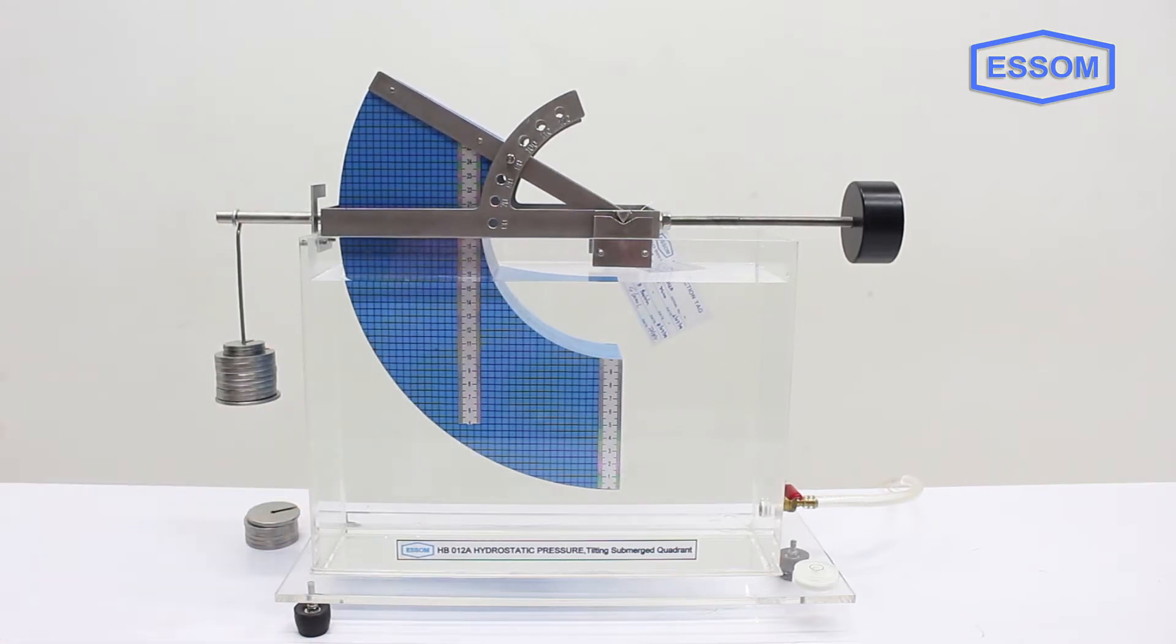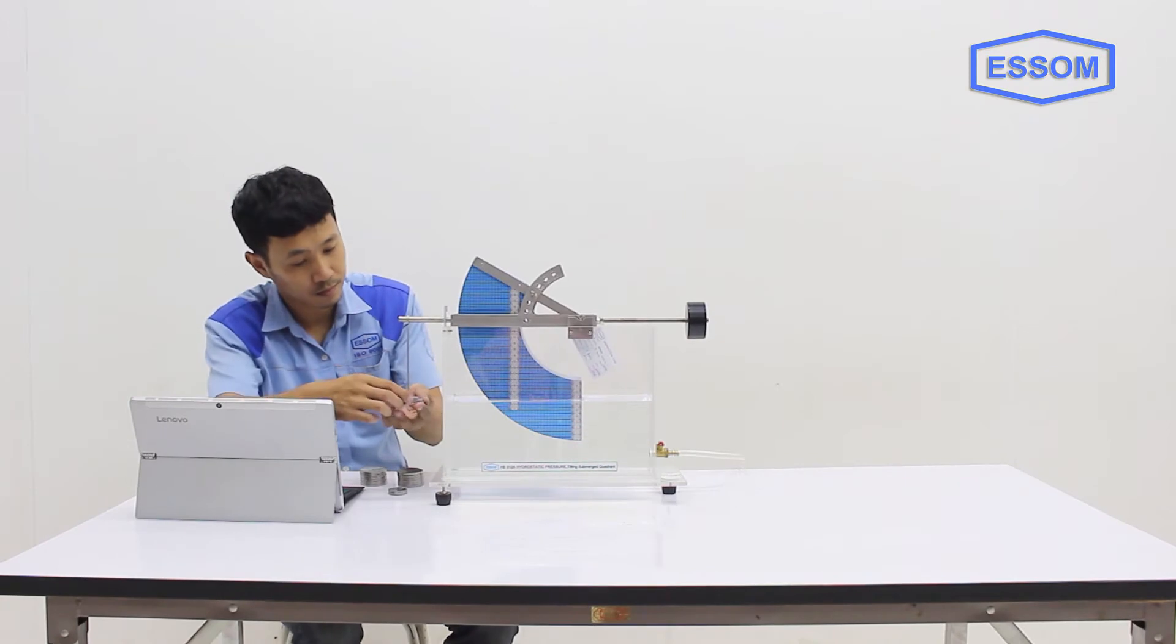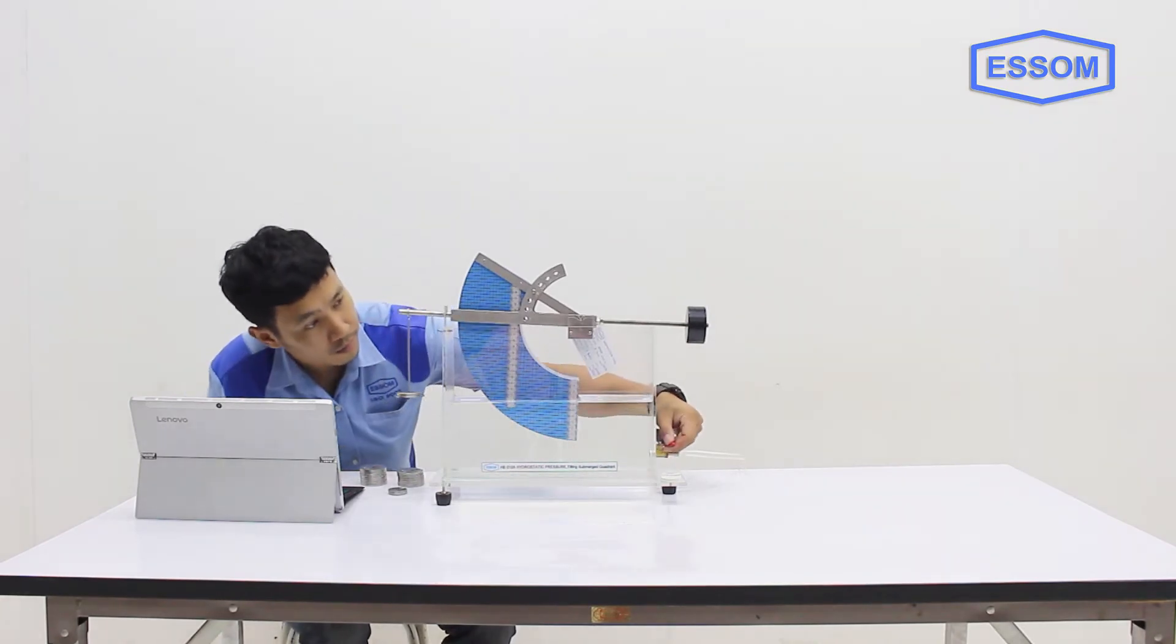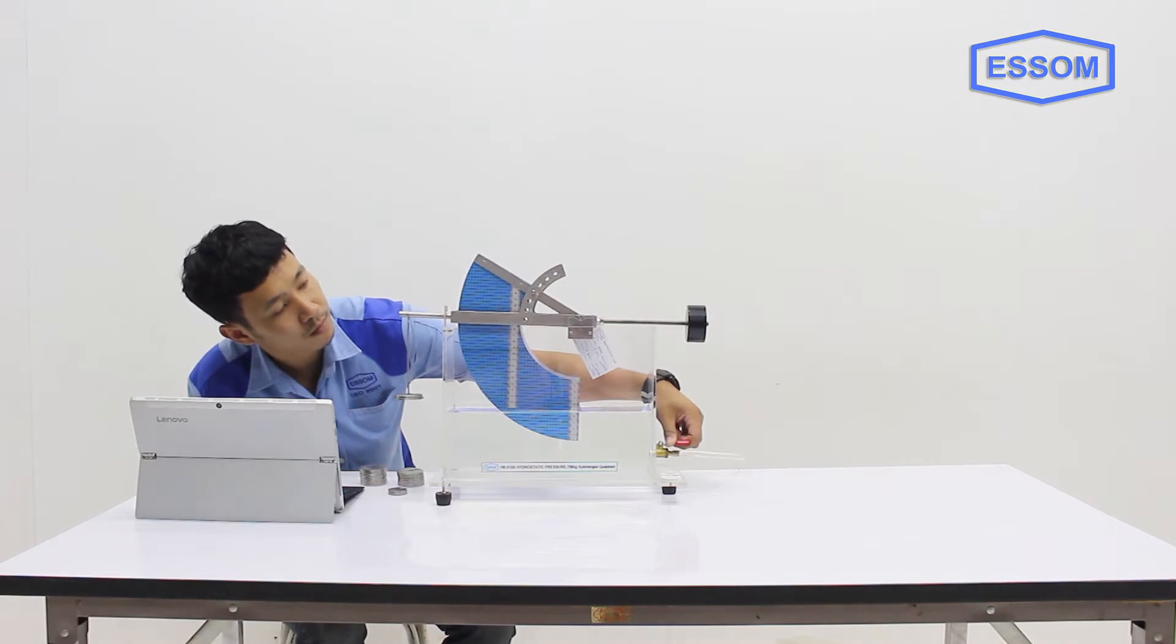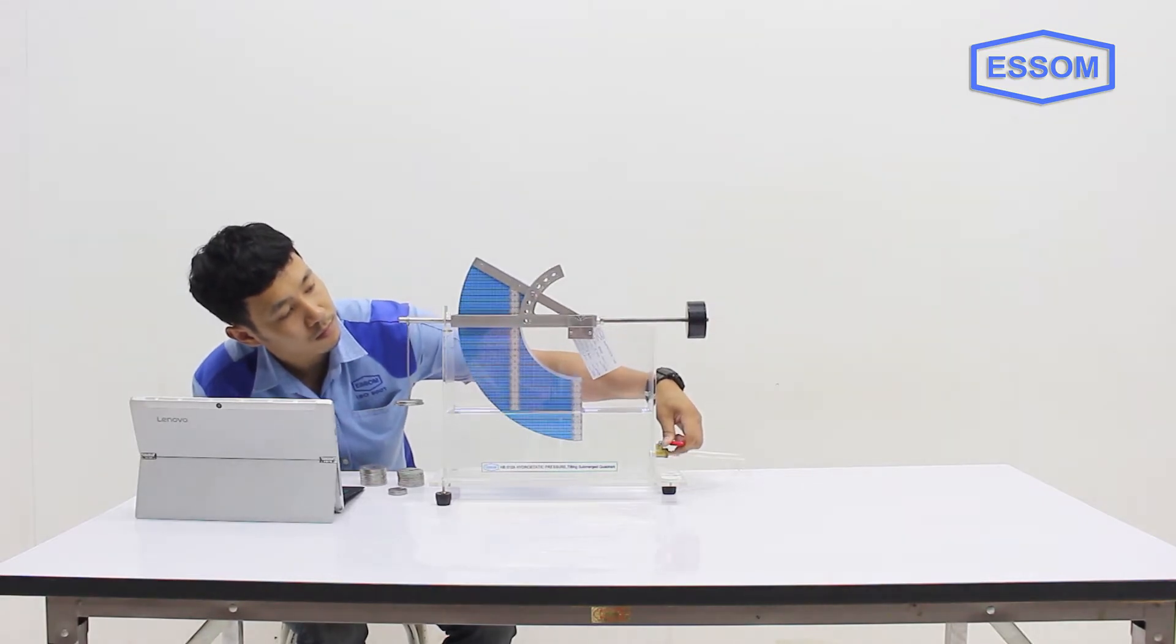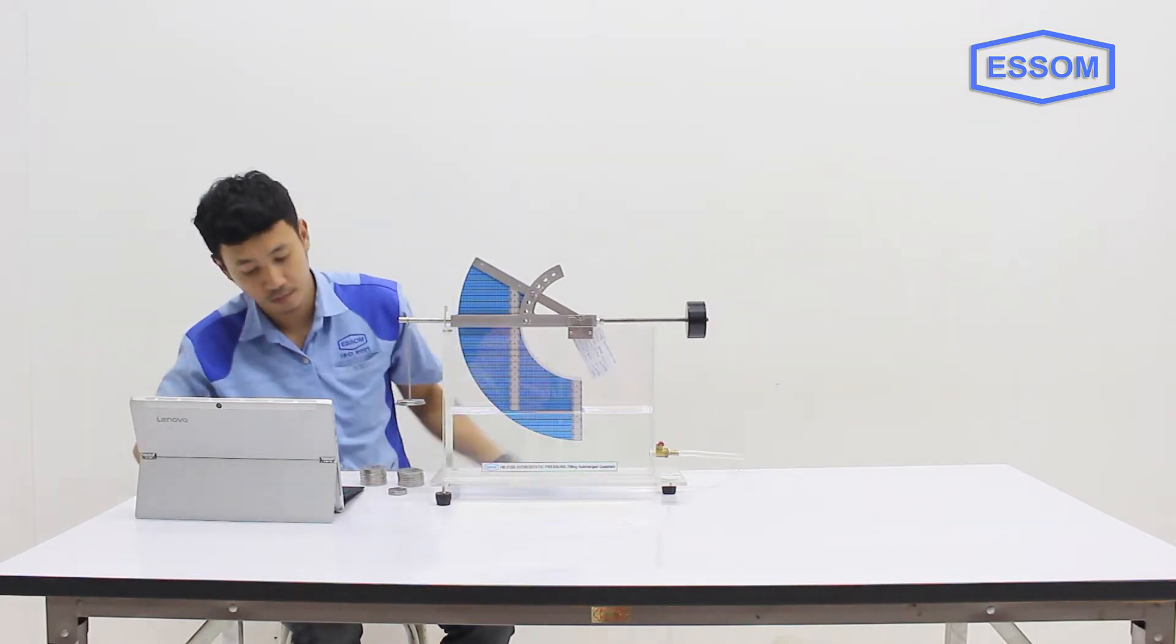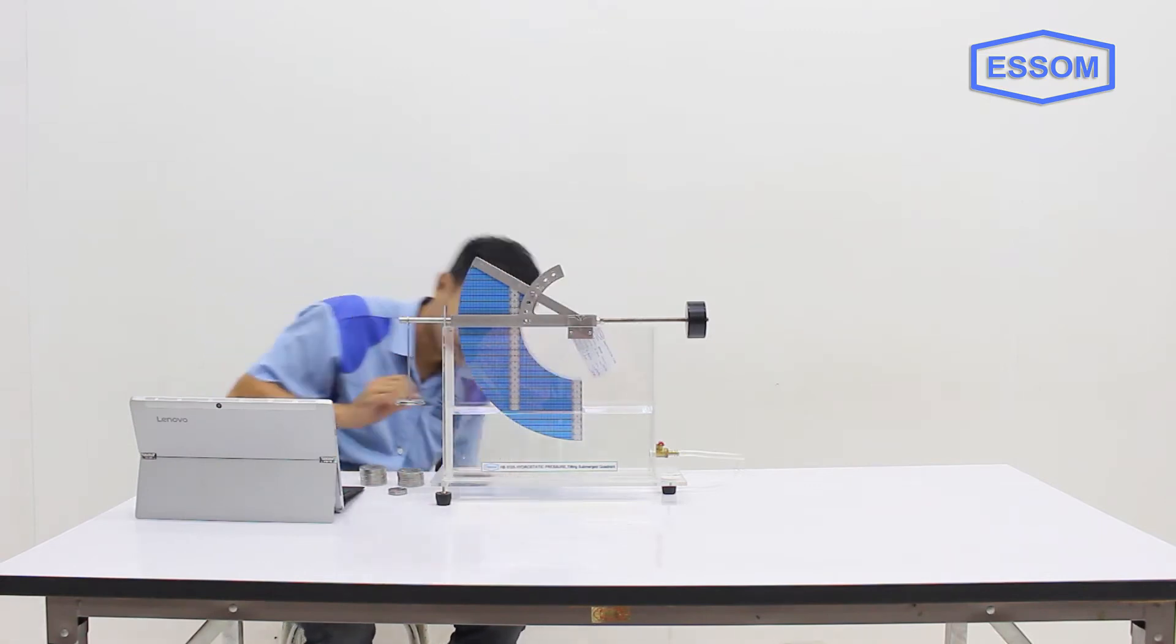When the quadrant is immersed in water, there are hydrostatic forces. The balance arm has an adjustable counterbalance and weights with a hanger. The quadrant is mounted on top of a clear acrylic tank which allows water to be admitted and drained to required level by a valve. The tank rests on adjustable footings and a bulls-eye level is provided.